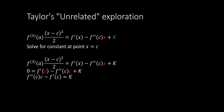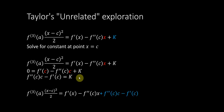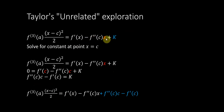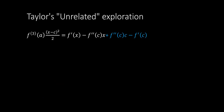Now continuing on, I take the original expression and remove the constant, substituting it with the result we just found. So instead of having a plus K, I plug in the expression we solved for K. I have this new expression, and again there's no obvious reason yet why we're doing this — just think carefully about how all of these equality statements are true.